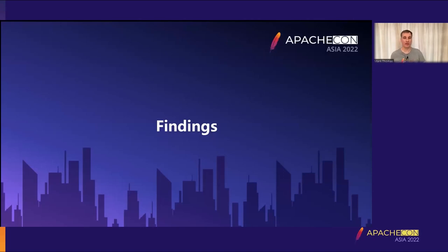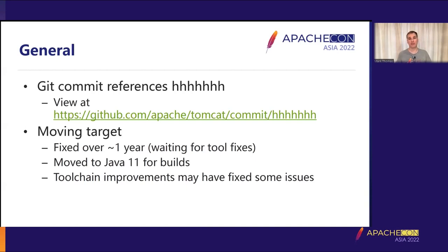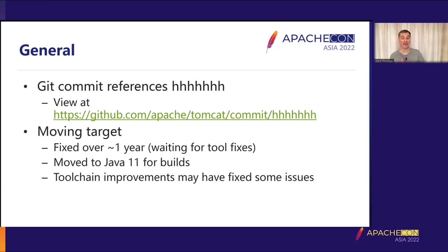What did we actually find when we started running through this process? I'm going to go through pretty much all of the findings one by one. Each finding has a git reference — to see how we fixed it, go to github.com/apache/tomcat/commit/ and append the commit reference. It's worth remembering we were working with a moving target; this work extended over about a year and various changes happened during that time.